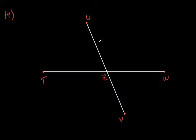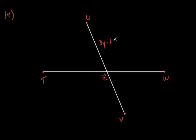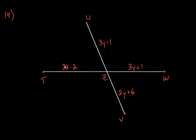So if I put 3Y minus 1 here, it's measuring line segment UZ. Then 3Y plus 1 is there, 2Y plus 6 is VZ, and 3X minus 2 is TZ. They tell you something else in the instructions: find the value of X and Y, if line segment UV bisects TW. What does bisect mean? It intersects it into two equal parts — it hits it in the middle.